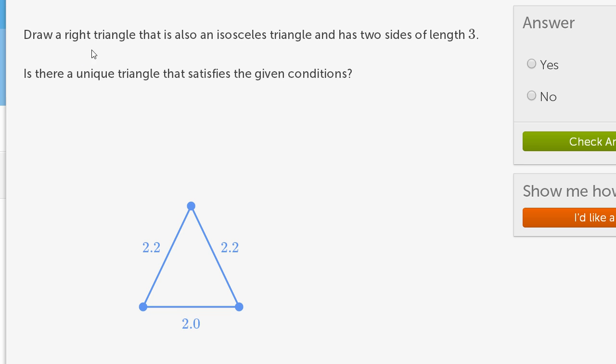They're asking us to draw a right triangle, so that means it has to have a 90 degree angle. That is also an isosceles triangle, so that means it has to have at least two sides equal. And it has two sides of length 3. So those two sides that are going to be equal are going to be of length 3.